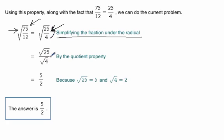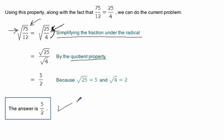We can break those down into two parts by the quotient property: square root of 25 over square root of 4. Those just simplify — square root of 25 is 5, square root of 4 is 2. And there's our answer: 5 halves.